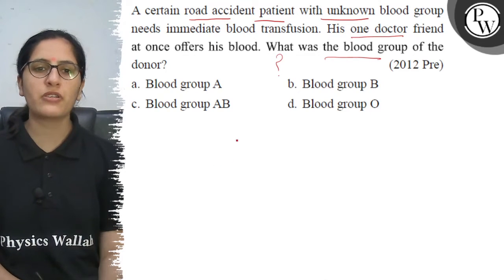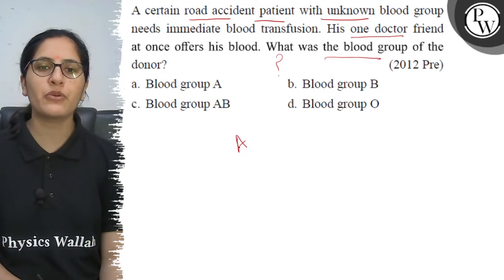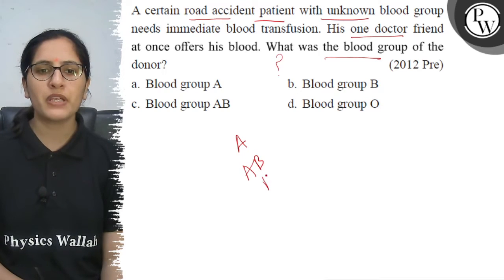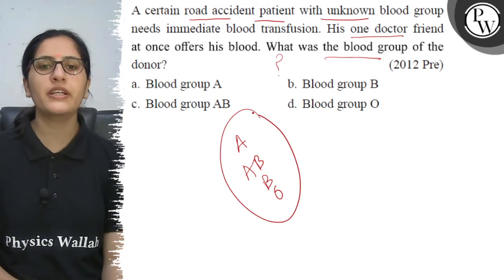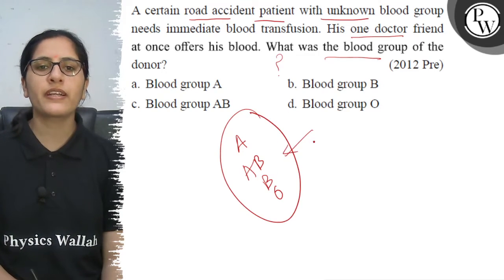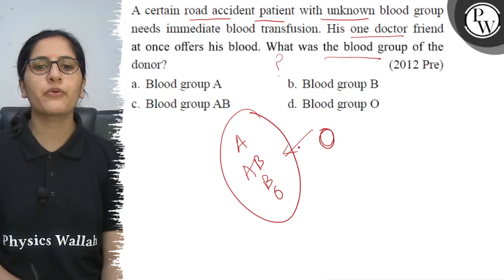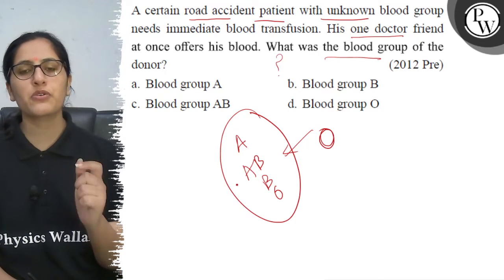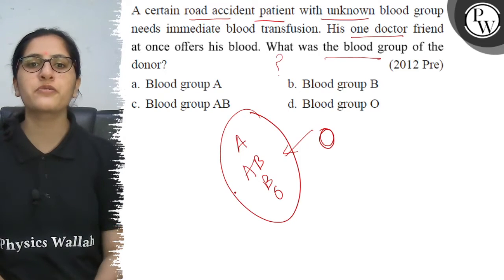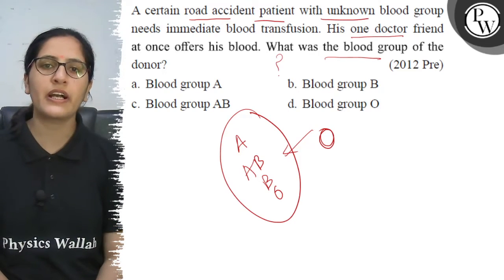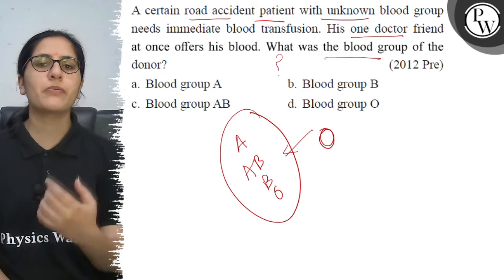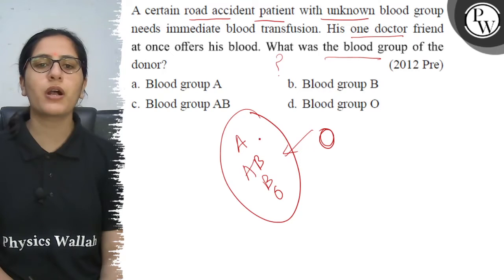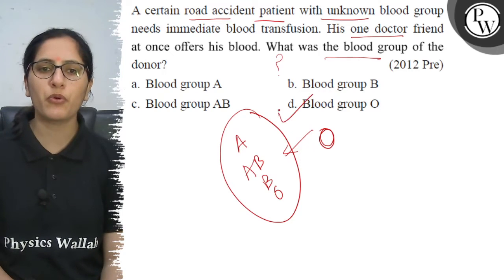If the patient's blood group is A, B, AB, or O — in all conditions, the patient can take blood from a blood group O donor. That's why the doctor friend who gave the blood must have blood group O.